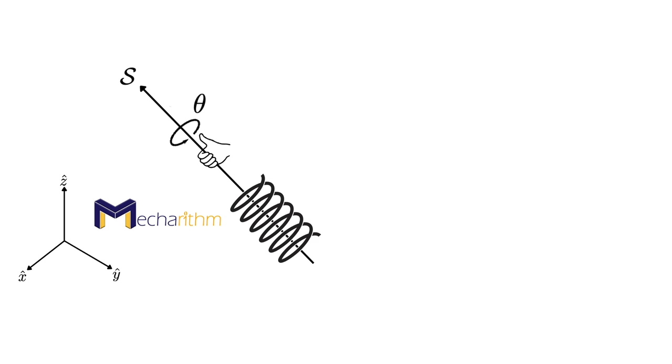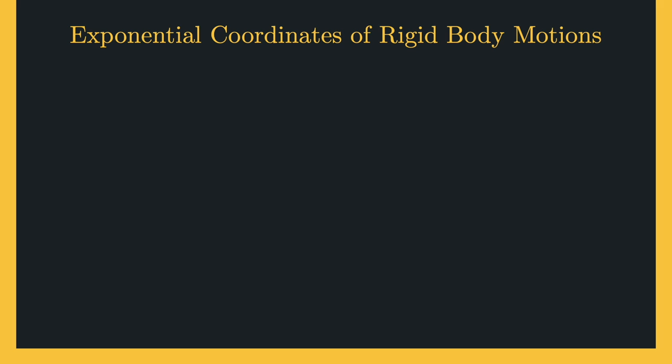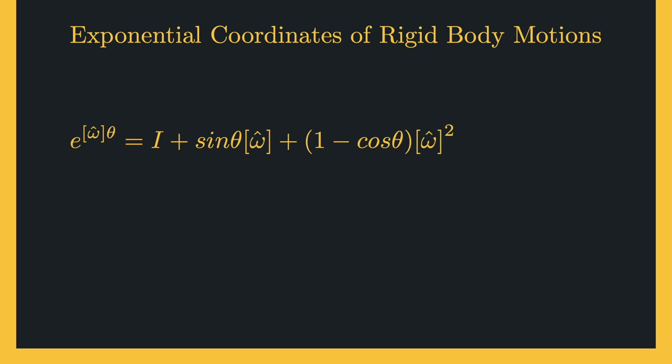The matrix logarithm is the inverse of the matrix exponential and finds the matrix representation of the exponential coordinates. This means that given a configuration, we want to find the screw axis and theta such that following along and about this screw axis by that amount gives the same configuration. The normalized screw axis for full spatial motions is analogous to the normalized angular velocity axis for pure rotations. Let's examine if we can find a closed-form solution for the matrix exponential for rigid body motions.